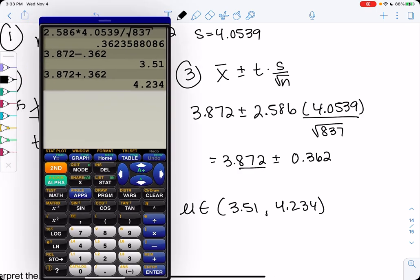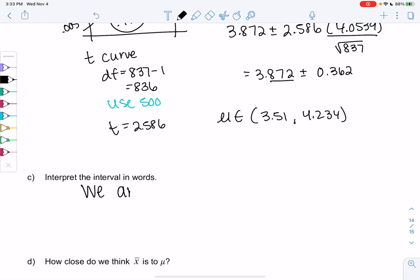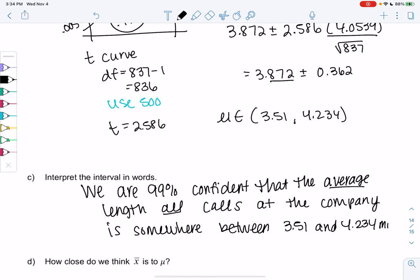We're pretty sure the average length of phone calls is somewhere in this interval. How confident are we? We're 99% confident. We are 99% confident that the average length of all of the phone calls at the company is somewhere between 3.51 and 4.234 minutes. We don't know the true value because we don't possibly have the time to take every single phone call at this company, but with our sample of 837, we can make a pretty good estimate.